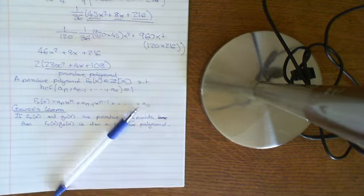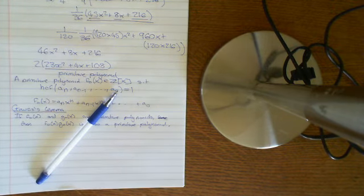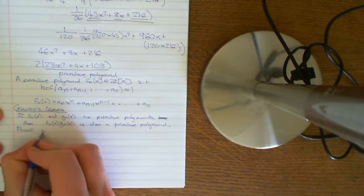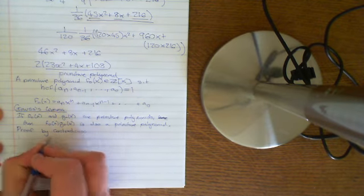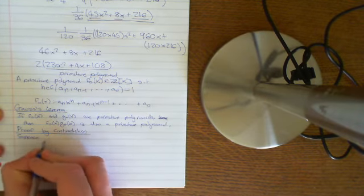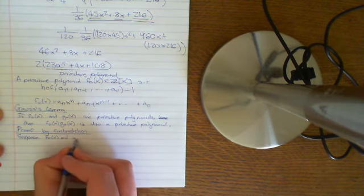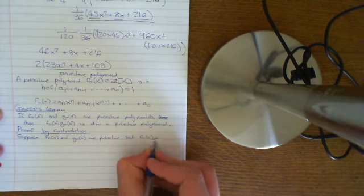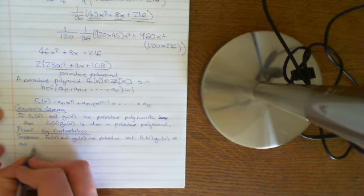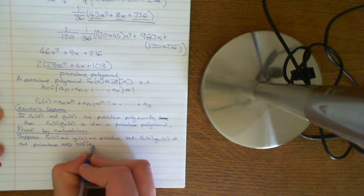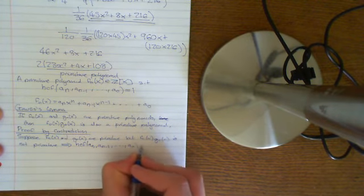The proof uses concepts from ring theory — specifically ring homomorphisms. It is a proof by contradiction. Suppose F₀(x) and G₀(x) are primitive, but F₀(x) times G₀(x) is not primitive. That implies that the highest common factor of all the coefficients a_n, a_{n-1}, ..., a_0 of the product is not equal to 1.